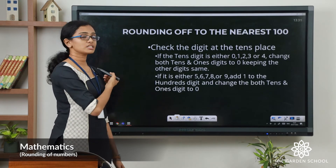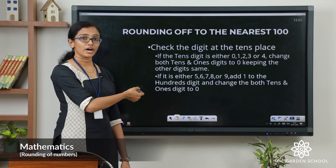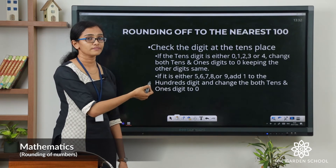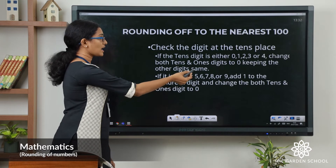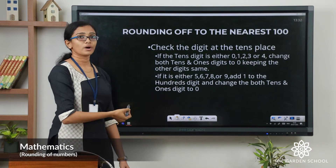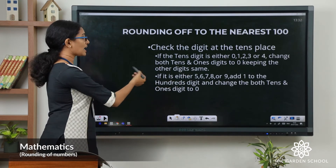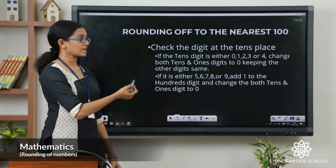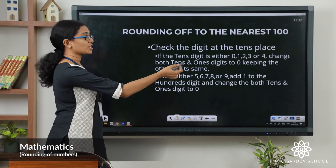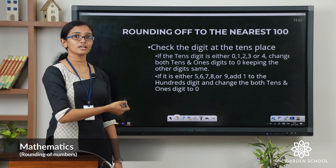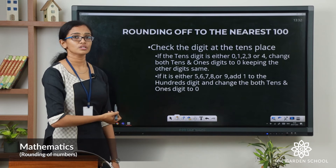And if the tens digit is 5 or more than 5, you have to add 1 to the hundreds digit and change both the tens and ones digits to 0.